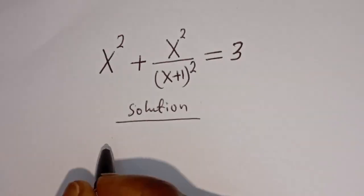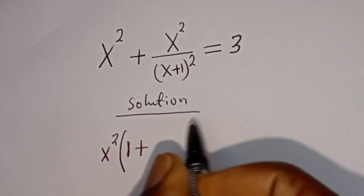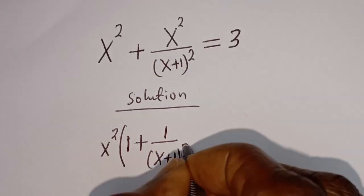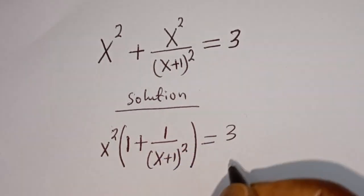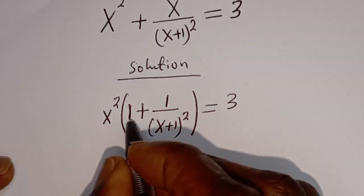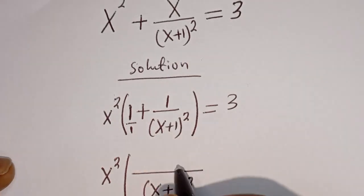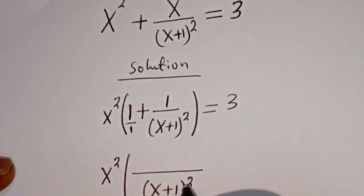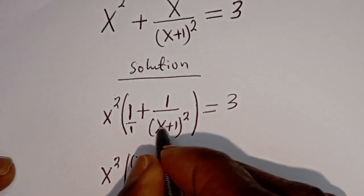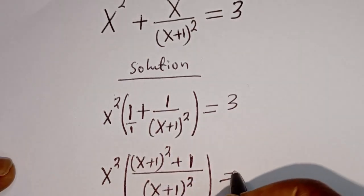Then here, S squared is common — let's bring it out. We have S squared bracket. If we divide this by this, we have one plus, if we divide this S squared by this S squared, we have one divided by (S plus 1) squared, is equal to three. Then here we have S squared bracket. The LCM is (S plus 1) squared. One times (S plus 1) squared, plus (S plus 1) squared divided by (S plus 1) squared — that is 1 — multiply by 1, that is 1, is equal to 3.